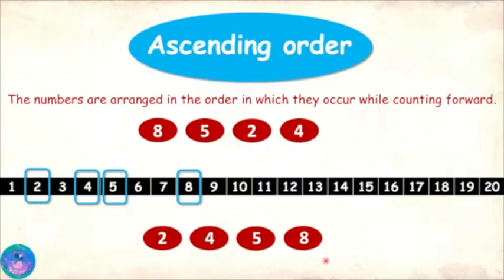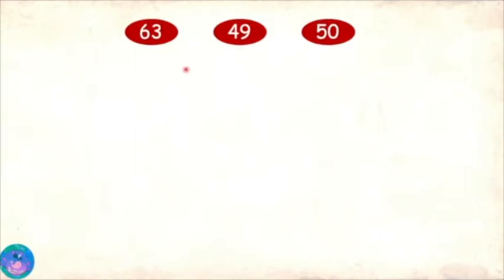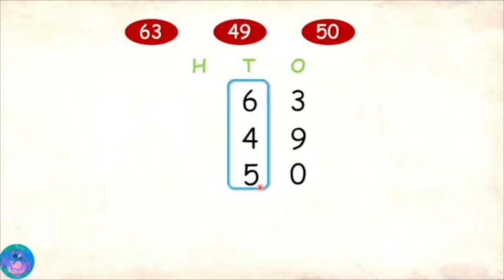So using place value to compare numbers? That's right. So let's take an example. We have 63, 49, and 50. So we will first write down the numbers one under the other according to place value. Then start with comparing digits in the biggest house. Now the biggest house having digits is the tens house.